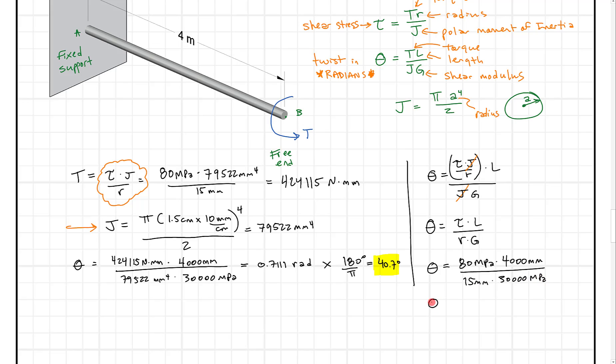And likewise when we do this out we're going to get 0.7111 radians. We multiply that by 180 over pi and we get the same thing of 40.7 degrees without ever having to calculate J. So that's a one step shortcut. Maybe it helps you.